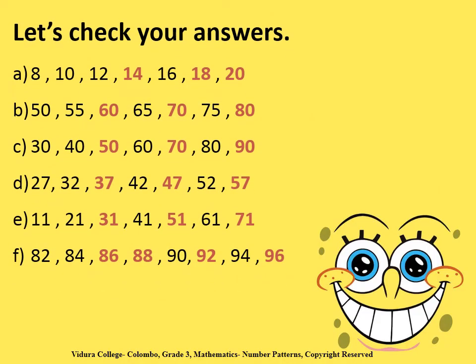Let's check your answers. The first number pattern: 8, 10, 12, 14, 16, 18, 20. Second one: 50, 55, 60, 65, 70, 75, 80. Third one: 30, 40, 50, 60, 70, 80, 90. Fourth one: 27, 32, 37, 42, 47, 52, and 57. Fifth one: 11, 21, 31, 41, 51, 61, and 71. And finally the last number pattern: 82, 84, 86, 88, 90, 92, 94, 96. Did you get all the answers correct? Well done.